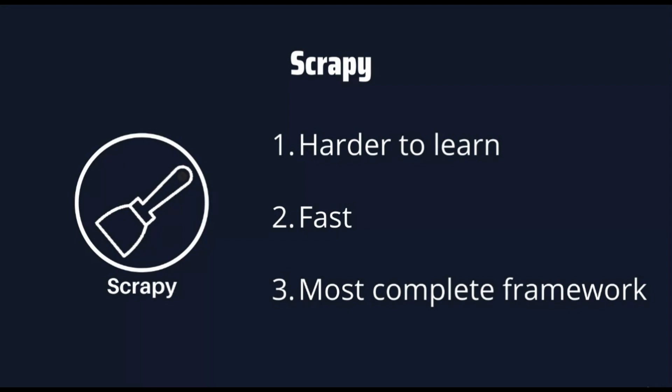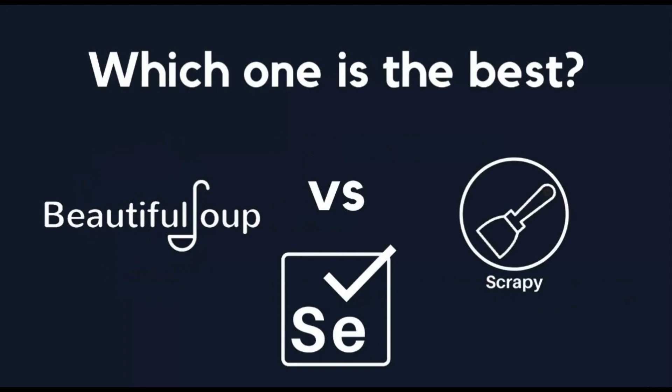So which one is the best? Every web scraping tool satisfies a specific need. Beautiful Soup will be great for beginners, Selenium will be good for small projects that need to scrape JavaScript-driven websites, while Scrapy will be great for large projects where speed is a priority. In this video you learned the differences between Beautiful Soup, Selenium, and Scrapy — choose the web scraping tool that fits the website you wish to scrape.